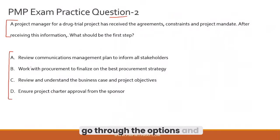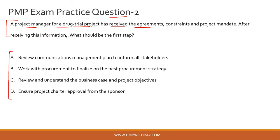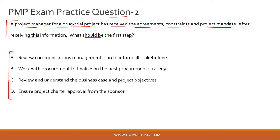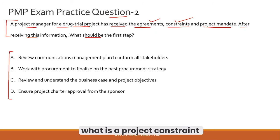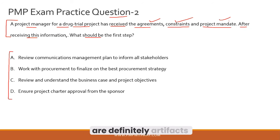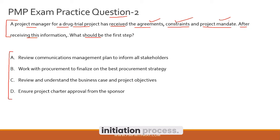Please read the question and try to answer it before we solve it together. A project manager for a drug trial project has received the agreements, constraints, and the project mandate. After receiving this information, what should be the first step? You should understand that these items — agreements, constraints, and project mandate — are artifacts generated during the initiation or pre-initiation stage, and generally feed into the project chartering process to produce the project charter.